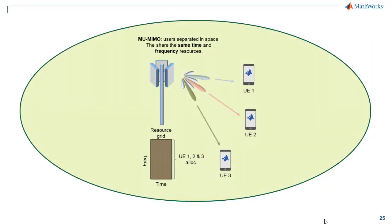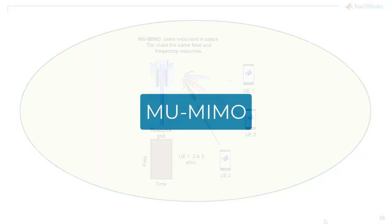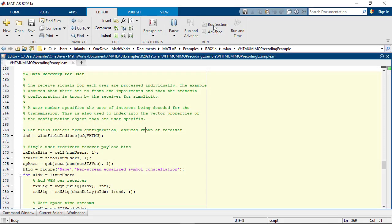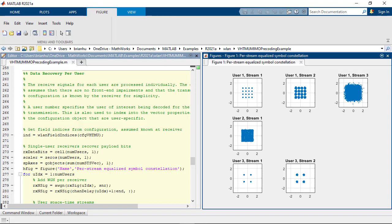Small cells are base stations that cover a short range, typically used in urban and indoor environments. They are used alongside Massive MIMO in 5G to provide high throughput in dense environments. Multi-user MIMO is related to Massive MIMO since it uses spatial multiplexing to simultaneously communicate with multiple users under the same time frequency. Combined with Massive MIMO, multi-user MIMO can greatly improve cell throughput.